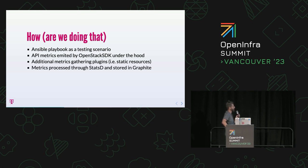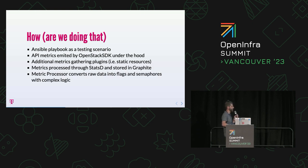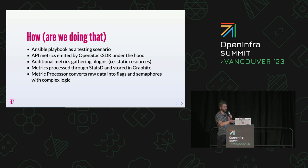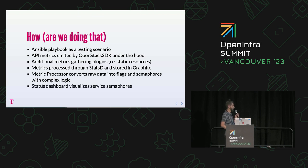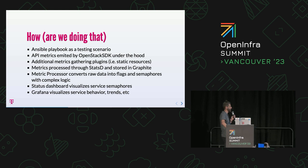Metrics go out of OpenStack SDK, through StatsD, and then land in Graphite. There is an additional component called the metric processor that tries to translate different physics of the metrics into what we call flags and semaphores - some abstraction which helps us calculate SLAs later. We also have a status dashboard that visualizes all the statuses. Last but not least, we have Grafana, which visualizes the raw metrics and trends - something that regular ops are then able to consume.